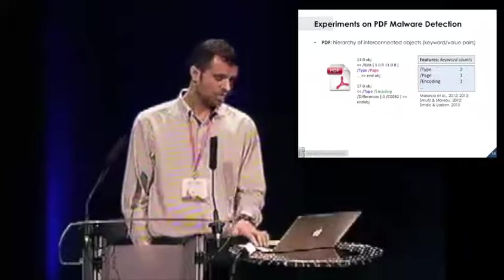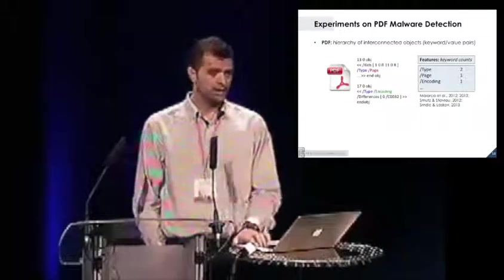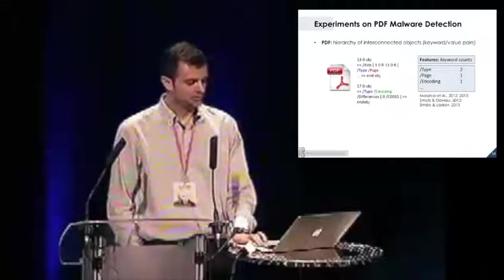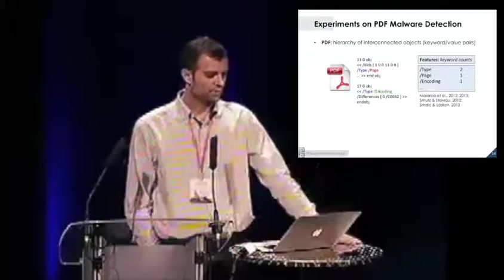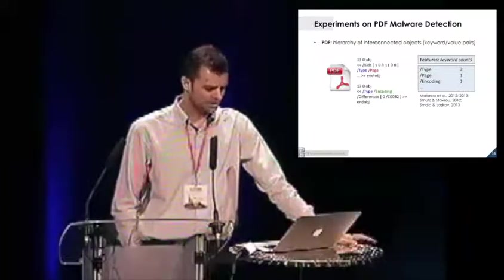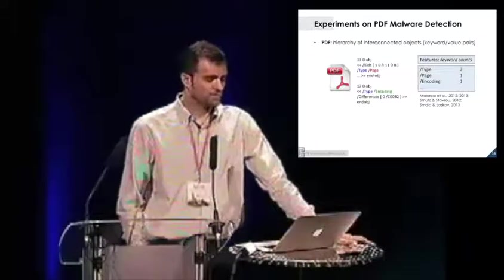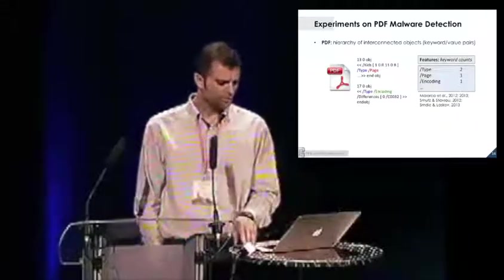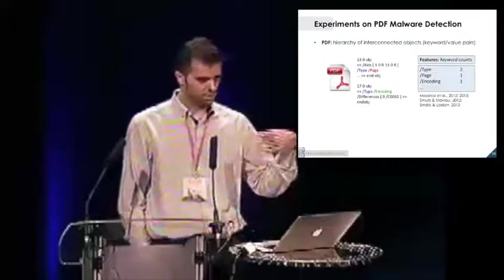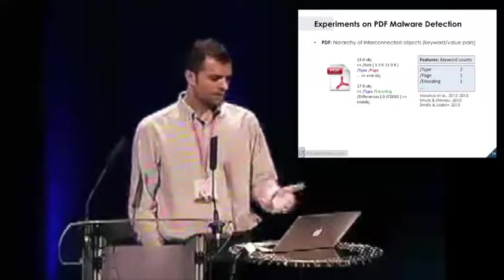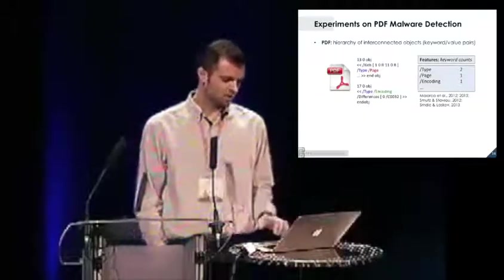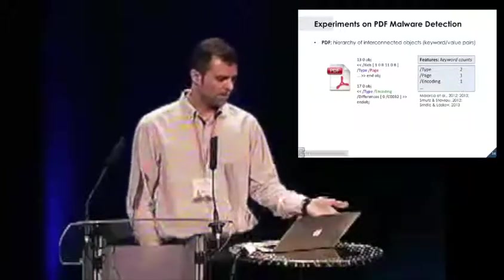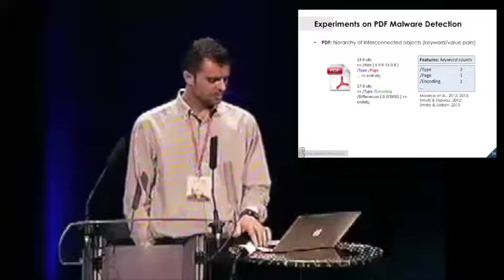So this is just a toy example. Then we carried out some experiments on real data. In particular, we consider the task of PDF malware detection. As I said, PDFs can be considered a hierarchy of interconnected objects. In particular, these objects are pairs of keyword and data. Several work has proposed to detect the presence of malware or computer viruses inside PDF files by looking at the PDF structure. In the easiest case, you have just to count the occurrence of keywords inside the PDF. So it's just the histogram of features, of keywords.